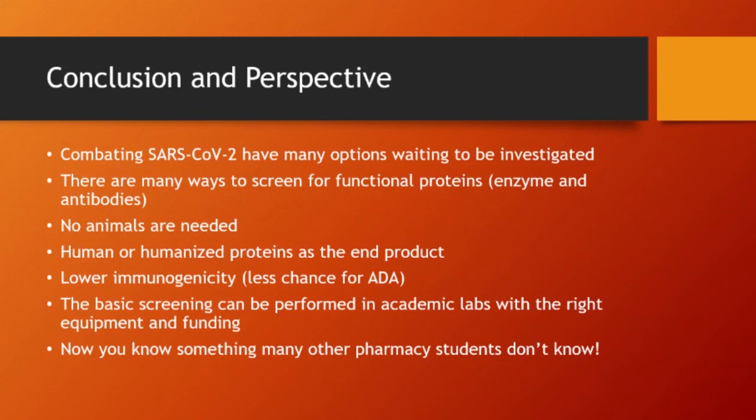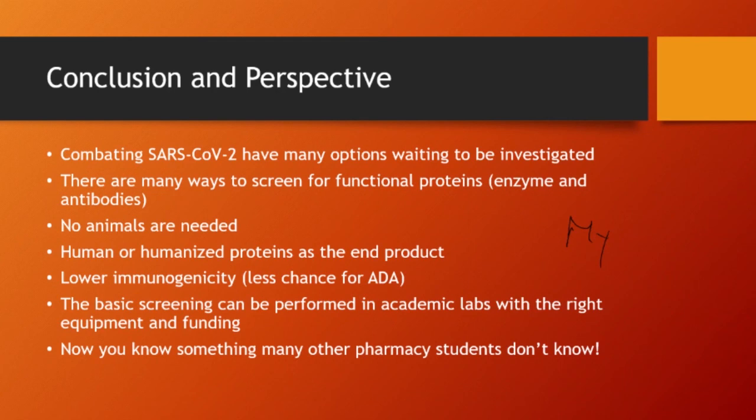What are the conclusions and perspective? Combating SARS-CoV-2 has many options, in my opinion, waiting to be investigated. I think these activities are going on, or as soon as the lockdown is lifted, people will go back to the lab and bang these research efforts. There are many ways to screen for functional proteins — enzymes or antibodies — and they don't need animals. You don't need to use hybridoma technology, which I consider ancient. These new technologies are the future.